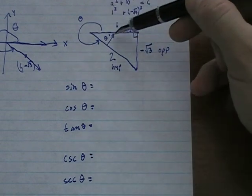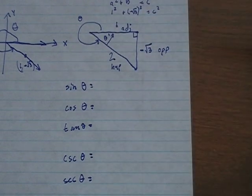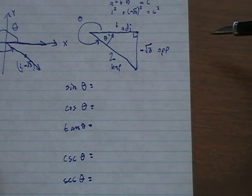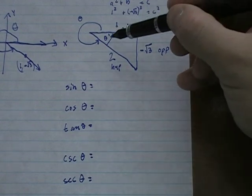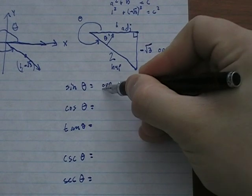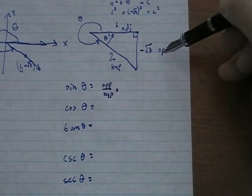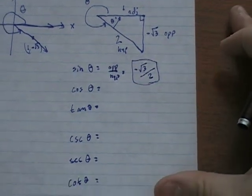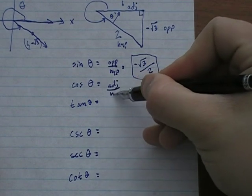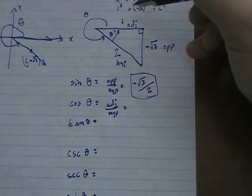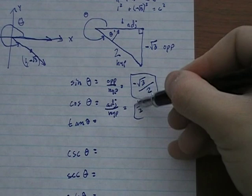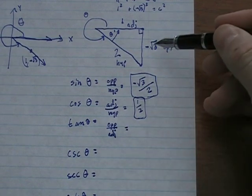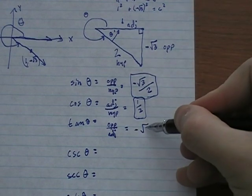Sine of theta equals opposite over hypotenuse, which is -√3 over 2. Cosine of theta is adjacent over hypotenuse, which is 1 over 2, or one-half. Tangent is opposite over adjacent, which is -√3 over 1, or just -√3.